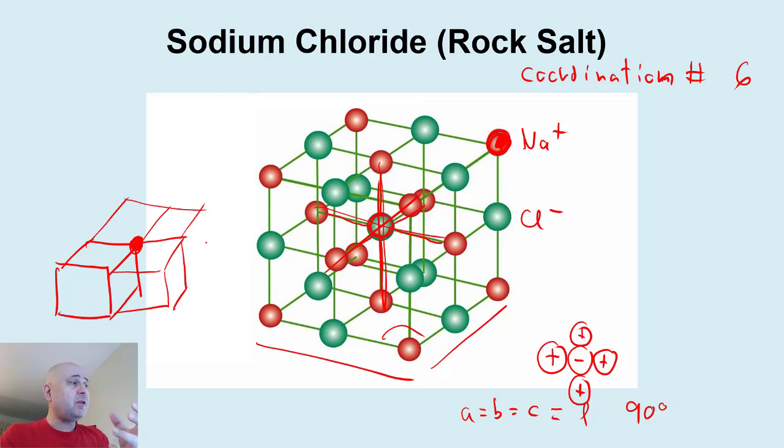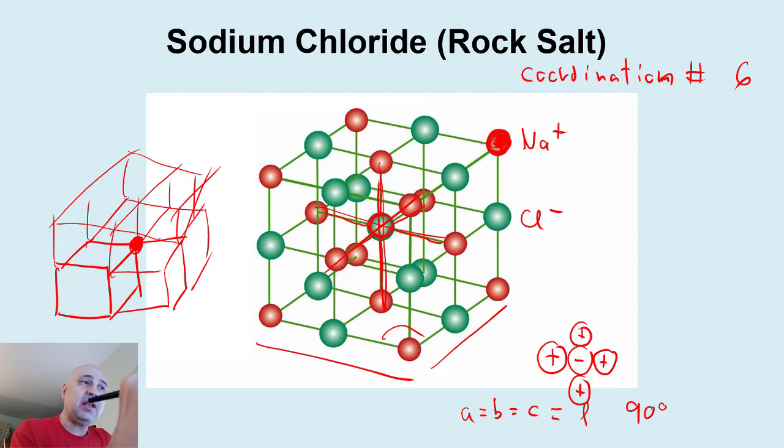This, what this means to make a long story short, is that this particular atom on the corner there is part of eight total cells, which means it only contributes one-eighth to the unit cell content. And we'll look at that in more detail.